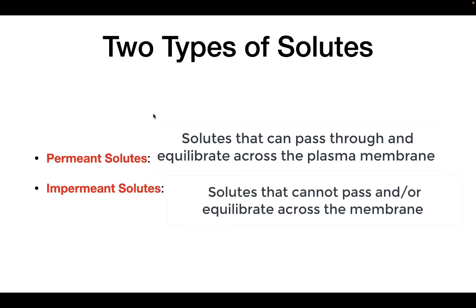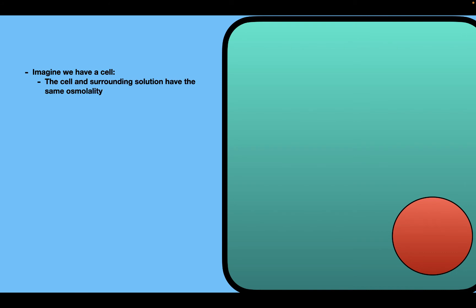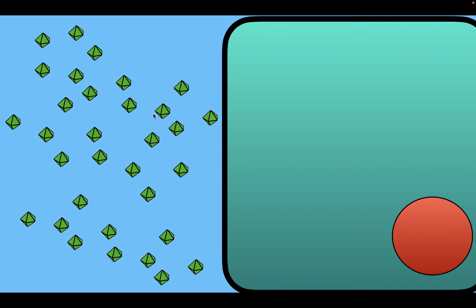So that was the effect of permeant solutes. Now, what is the effect of impermeant solutes? We're going to use the same experiment — a cell immersed in a solution where both start with the same osmolality. This time we add sodium as the solute. After adding sodium into the solution, the osmolality of the solution becomes greater than that of the cytosol.